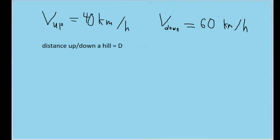Now, an immediate impulse might be to simply add the two velocities together and divide them by two, since that's generally how we take the average of multiple numbers. However, that doesn't apply in this case.